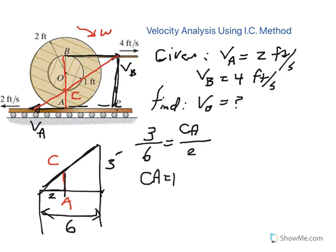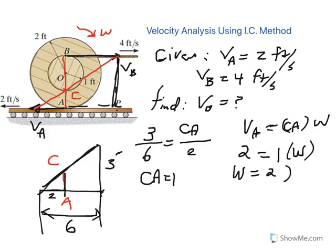So once you have CA, then you could say, if you wanted to find velocity of A, what would be velocity of A? Velocity of A would be R omega, but R is from the center to point A times omega. And since velocity of A we already know is two feet per second, and CA we just determined to be one foot, therefore omega from here becomes two. Once you have omega, and we know it's going clockwise, that's in radians per second.